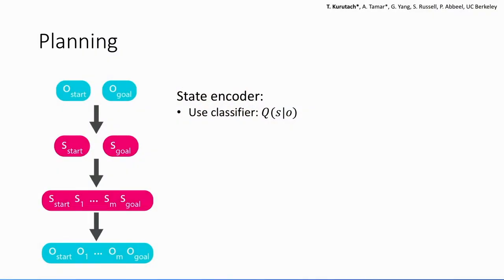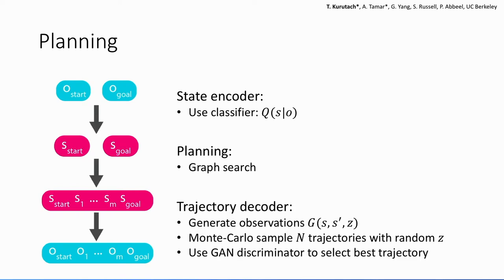So again, with this clustering, you can encode the observations into the states. Now we use this start and the goal states with graph search to find a plan in the latent space. Then finally, we can decode this sequence of states into this observation space through this generator that we have learned and use the GAN discriminator to help selecting the best trajectory.